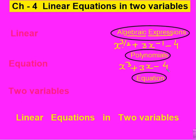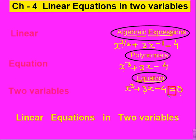Same वही polynomials को हम is equal to zero लिख देते हैं, तो वो convert हो जाते हैं equation में। जैसे हमने यह polynomial लिया — इससे equation में convert करना है, तो simply polynomial लेंगे और is equal to zero लिख देंगे। इसका मतलब यह है कि equation में एक is equal to का sign है, जिसके left hand side और right hand side में कुछ values होती हैं — वो equation हो गई।